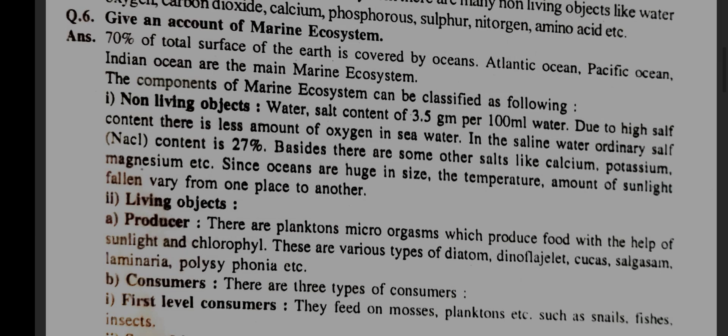Give an account of marine ecosystem. 70% of the total surface of the earth is covered by oceans. Atlantic Ocean, Pacific Ocean, and Indian Ocean are the main marine ecosystems. The components of a marine ecosystem can be classified as follows.